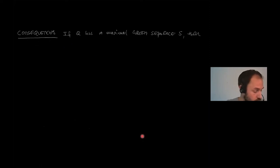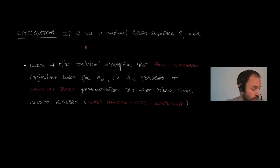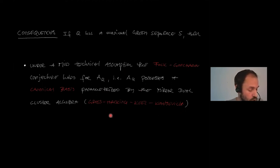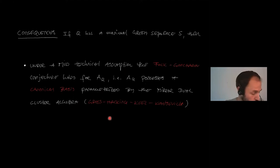These green sequences have nice consequences. If a quiver Q has a maximal green sequence, then under some mild technical assumptions the Fock–Goncharov conjecture holds for the cluster algebra A(Q), which says there is a nice canonical basis parametrized by the mirror dual cluster tropical points of the mirror dual cluster algebra. This is due to Gross, Hacking, Keel, and Kontsevich.